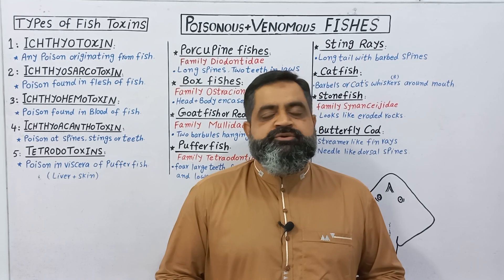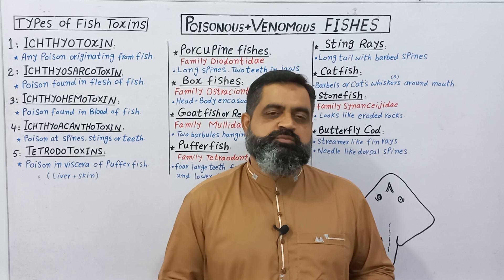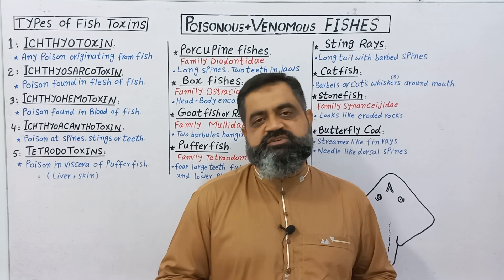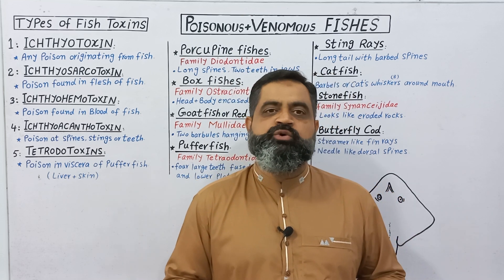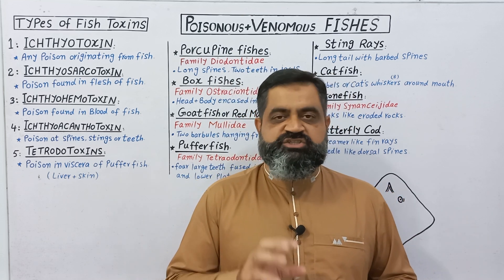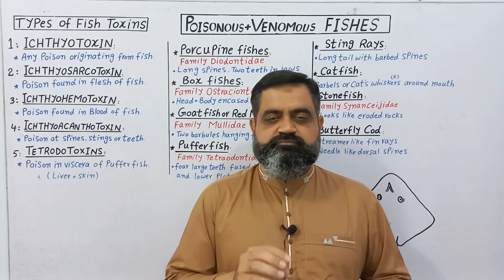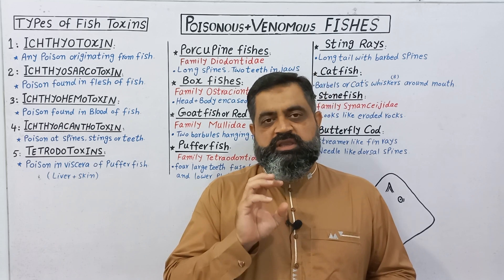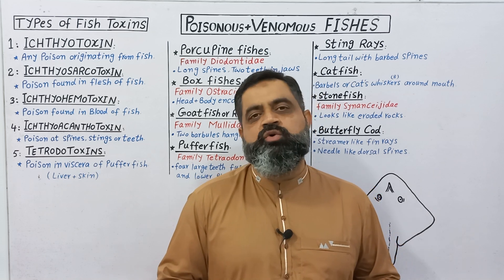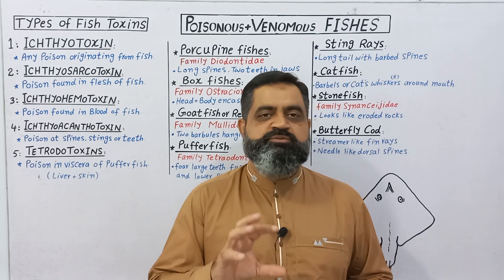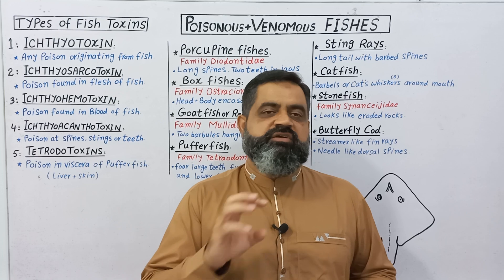Hello to all students. In this video lecture, we are going to discuss poisonous and venomous fishes. There are many species of fishes found in oceans and rivers which are usually poisonous and they can kill any animal or even human beings. First of all, we are going to discuss different types of toxins and poisons present in different types of fishes.